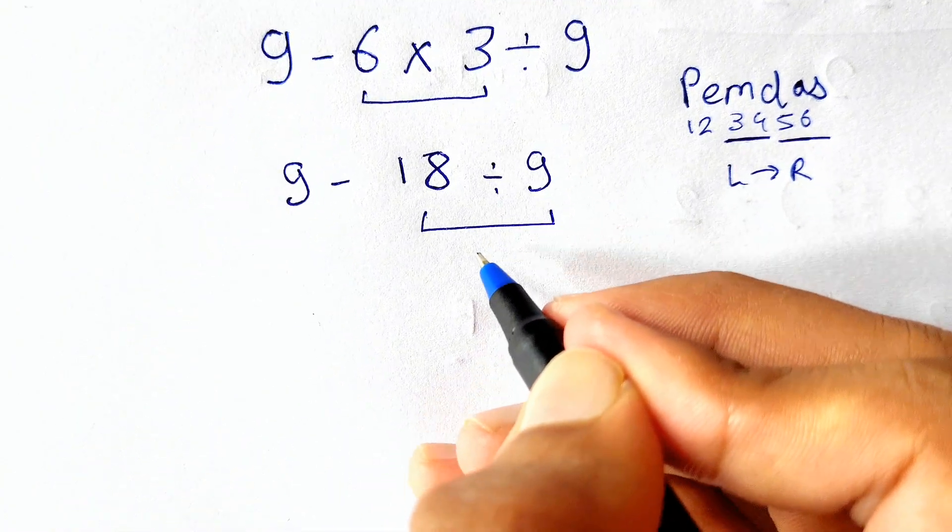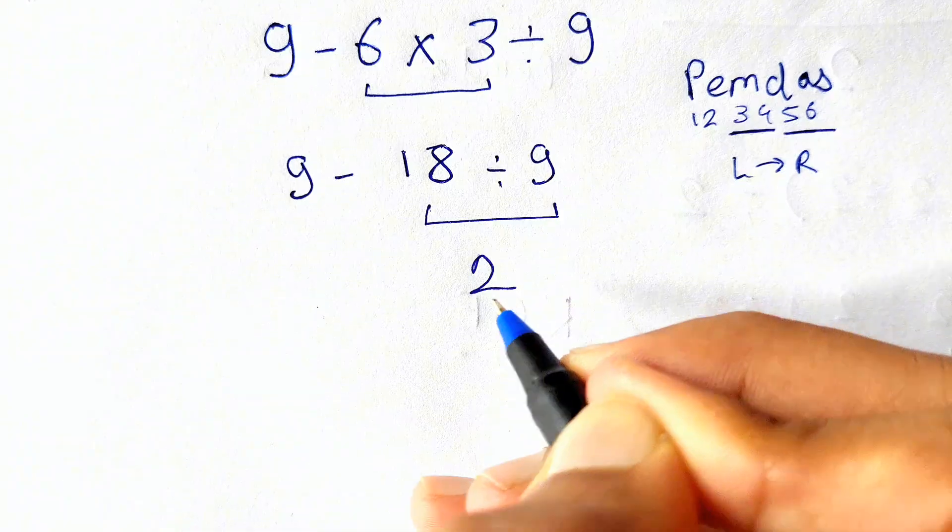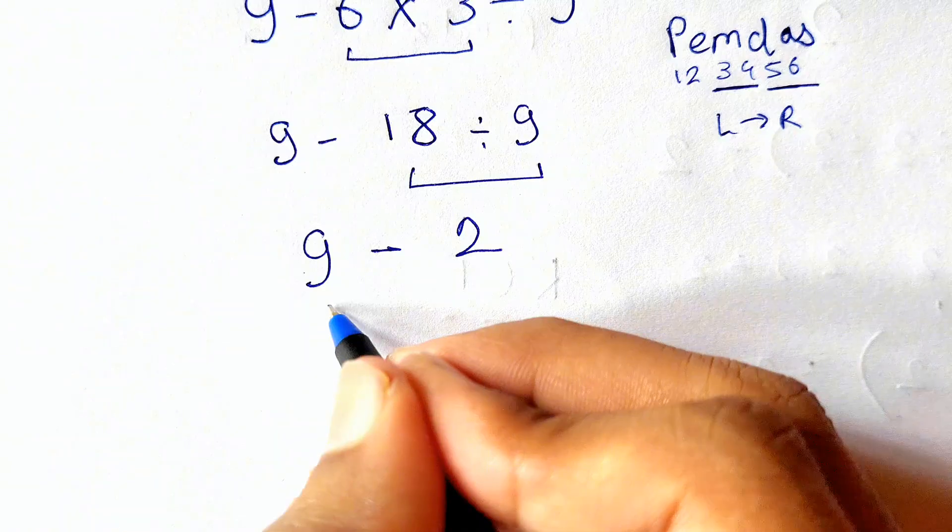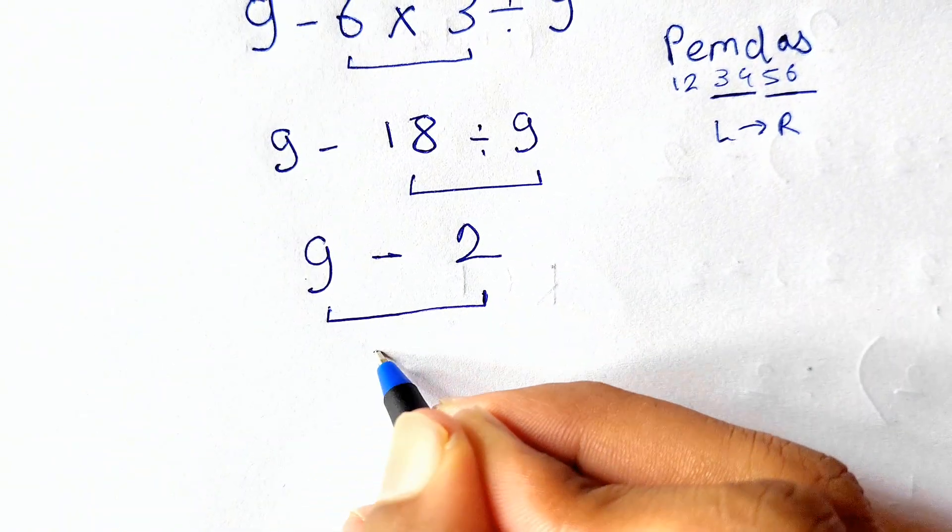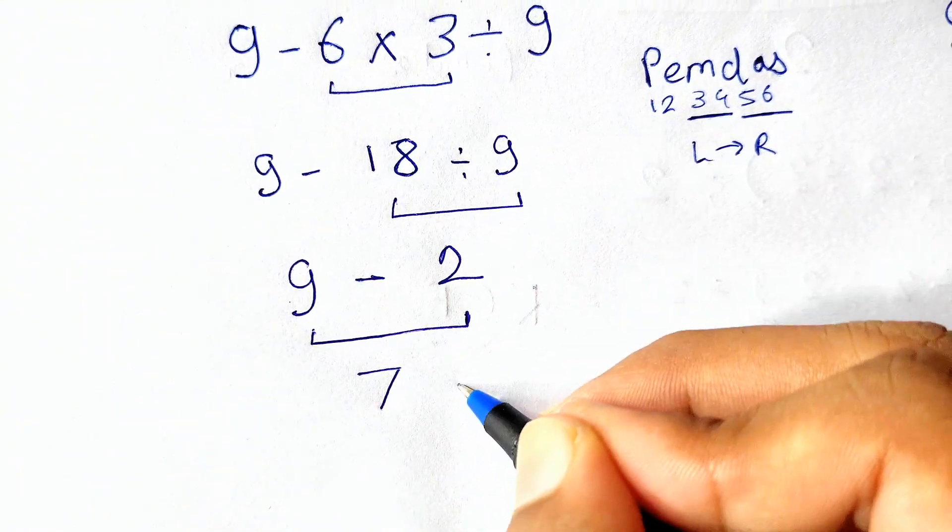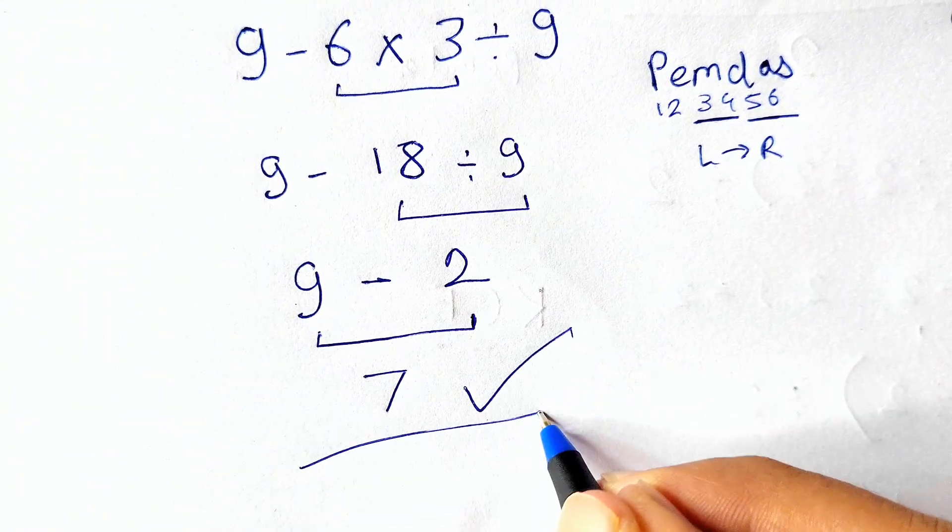And now we are left with only 9 minus 2. So 9 minus 2 is 7. So the final correct answer to this expression is 7. Did you get this right?